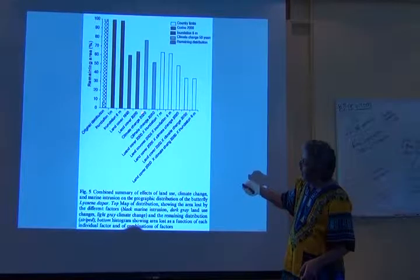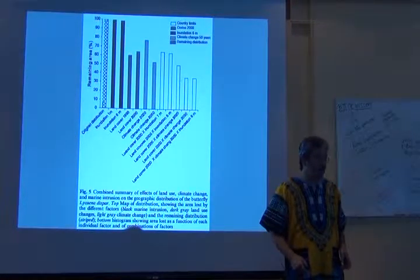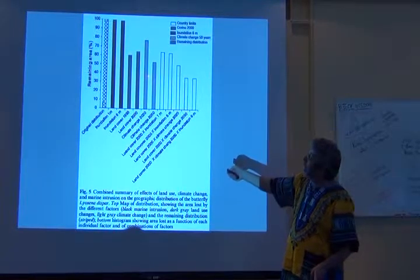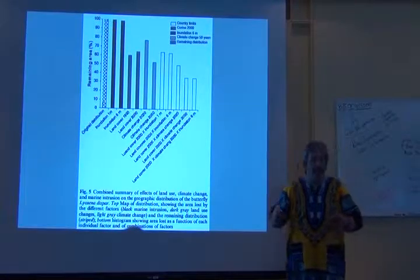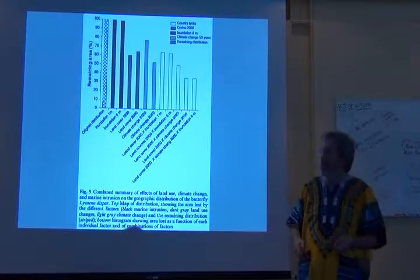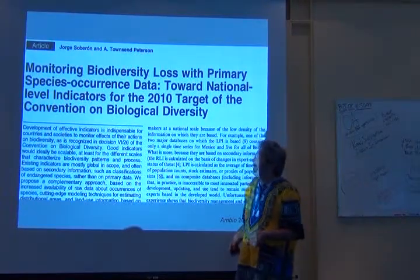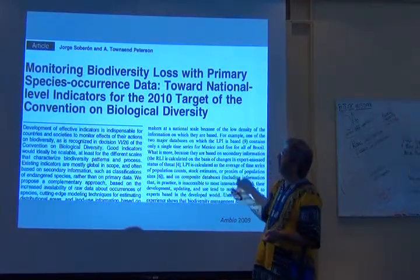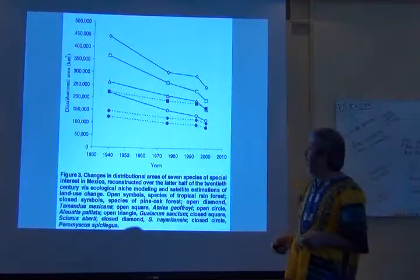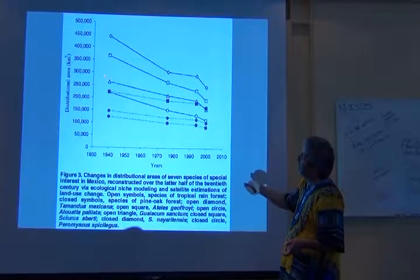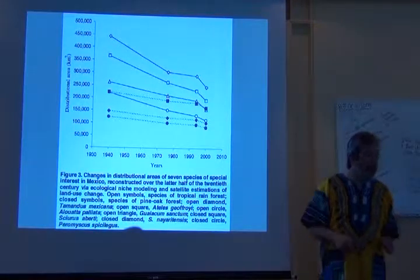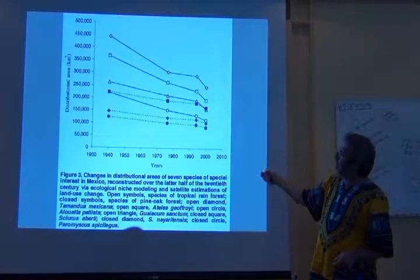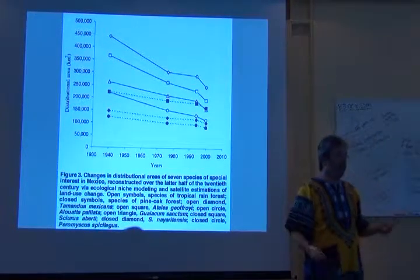We bring in land cover change and we're losing around 30% of the distribution. But if we combine land cover change with climate change, we can lose another 30%. This is a multifactorial exploration, bringing in a bit more complexity. In this paper, we took this policy question on more directly, working towards national level indicators for the different biodiversity targets. We contrasted tropical rainforest species in Mexico with pine oak forest species, finding relatively little loss in the pine oak species and relatively more in the rainforest species.